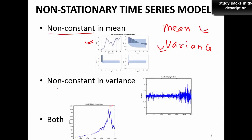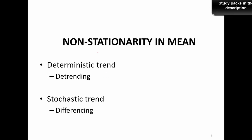Non-stationarity can also come from the variance. We could have a non-constant variance, which is another reason for non-stationarity. Sometimes there could be both non-constant mean and non-constant variance. The second example shows a case where the mean is very much constant, but the variance is actually increasing over time — that's a typical case of non-stationarity due to non-constant variance.